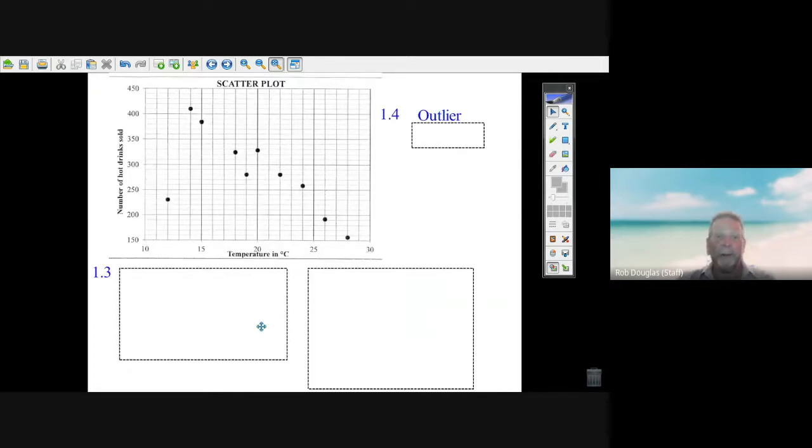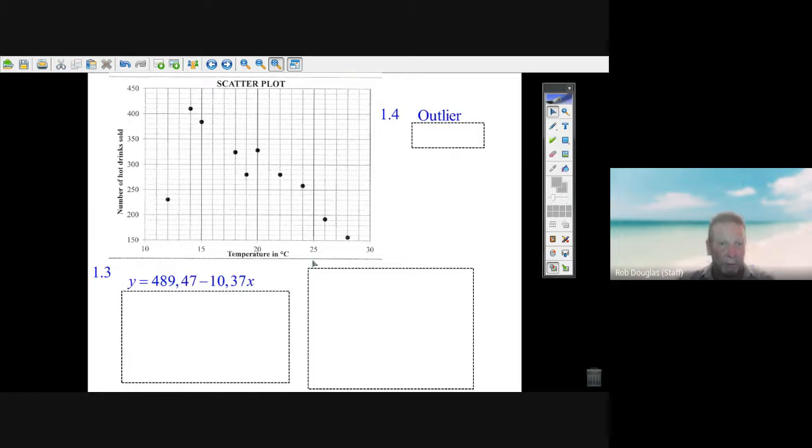Let's take a look at the next part. They say if you knew that the temperature was going to be 17 degrees, could you predict how many drinks are sold? Well, you use your equation to do the prediction. Don't try to make a line or any other estimate, just use your equation of the regression line. Instead of x, put in 17, put that in your calculator, and you get how many drinks are expected: 313 drinks.